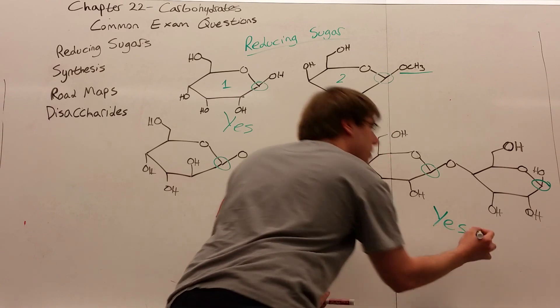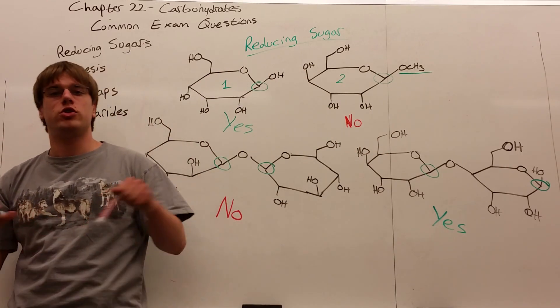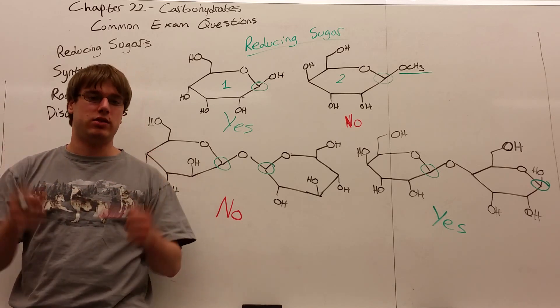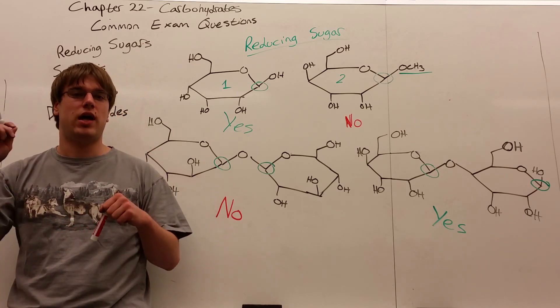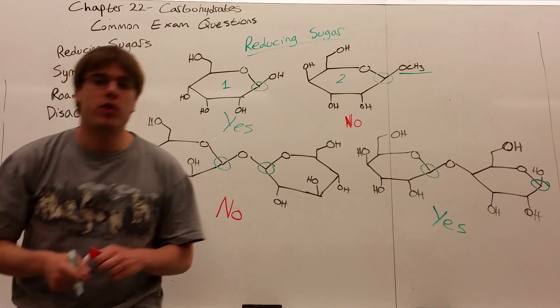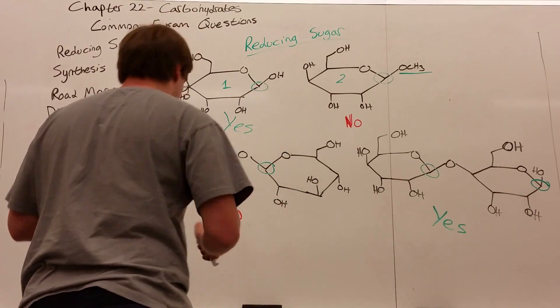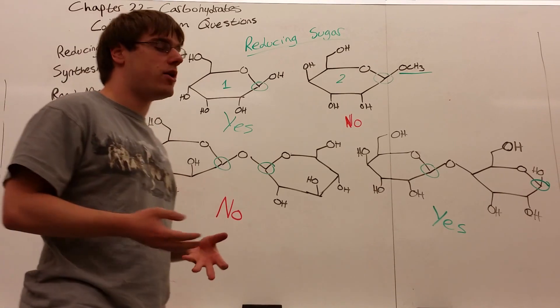As long as one anomeric OH is available, the sugar as a whole, no matter how long the chain is, is still considered a reducing sugar, because that one end can react with NABH4. And that's really all there is to the reducing sugar concept. If you have your anomeric OH, you are a reducing sugar.